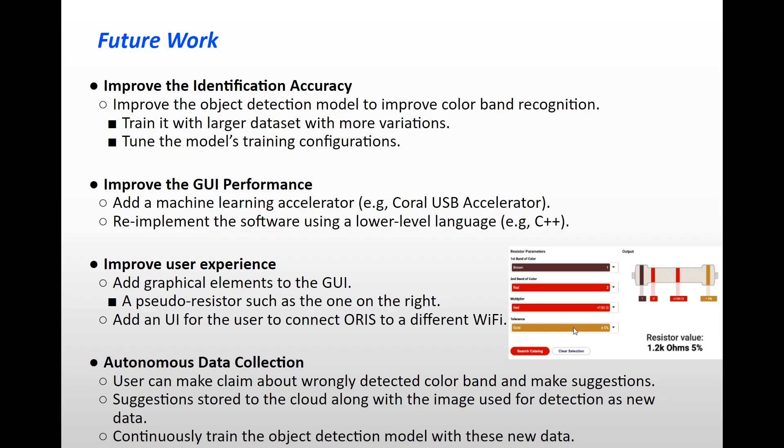Next, the suggestion which is the user's input will be uploaded to the cloud server along with the original image of the scanned resistor as new data. Then, after a certain amount of such collection, the cloud server will retrain the object detection model using the new data. The retrained model can then be downloaded by the ORIS and used further to detect new resistors.